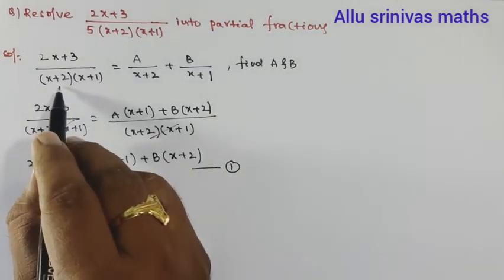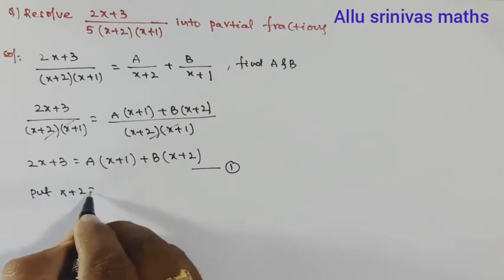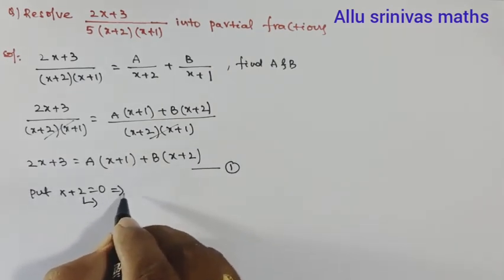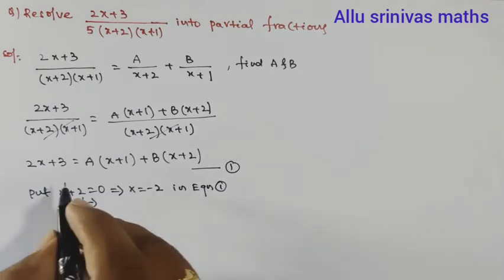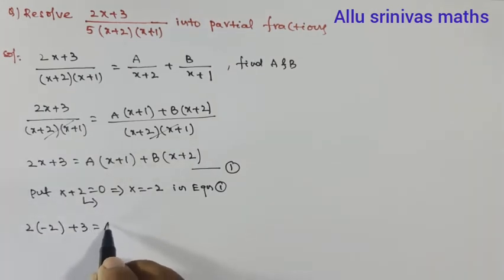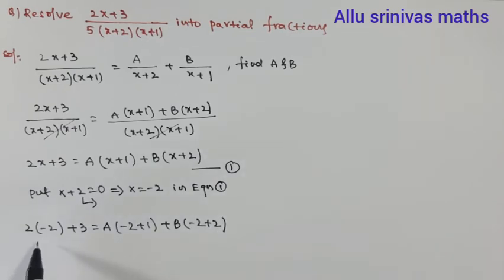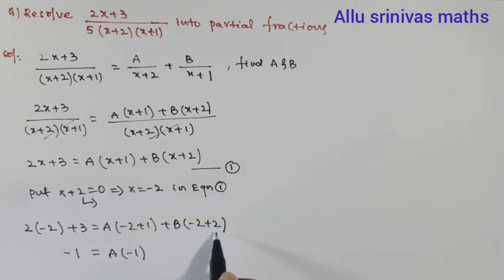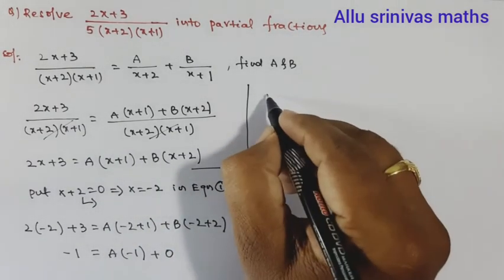Let us take the first factor: x + 2 = 0, so x = −2. Substituting in equation 1: 2(−2) + 3 = A(−2 + 1) + B(−2 + 2). Simplifying: −4 + 3 = −1, A(−1) = −A, and B times 0 = 0. So −1 = −A, giving A = 1.